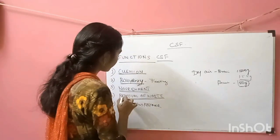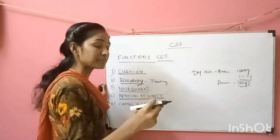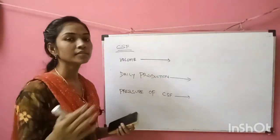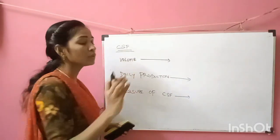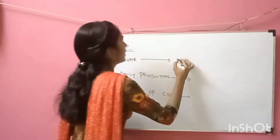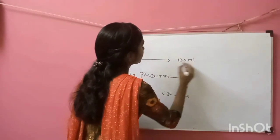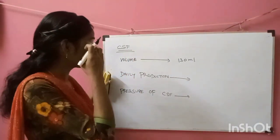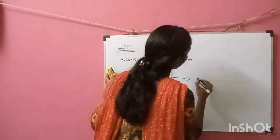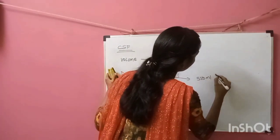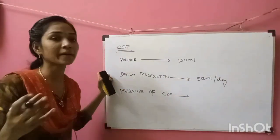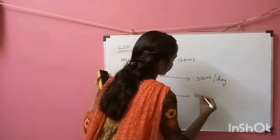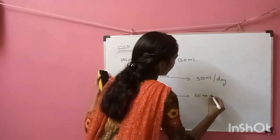The CSF also has the function of removal of waste products from the interstitium. The volume of CSF in the central nervous system is about 130 ml. Daily production of CSF is about 550 ml per day. The pressure of CSF is about 60 mmH2O.